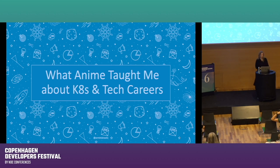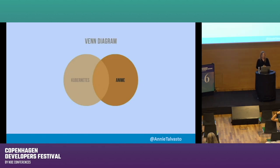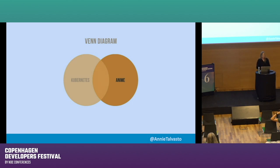Before we get started, I want to ask: who here identifies, to an extent, as an anime person in some way? Okay, a few people. Well, here is the Venn diagram — we have Kubernetes and anime, and the ones who raised their hands are perfectly in the middle with me, in the perfect spot.